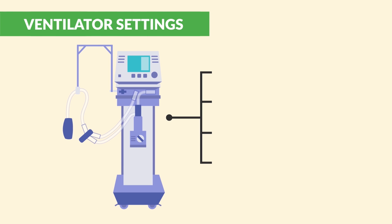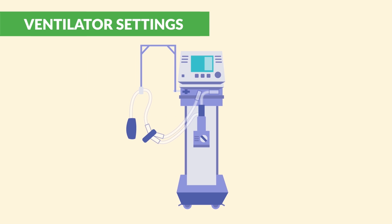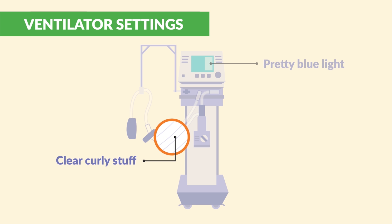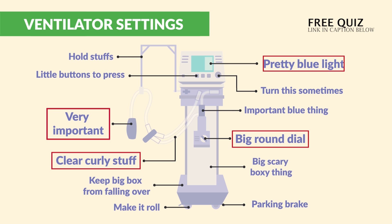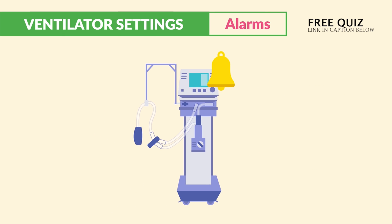Let's cover all the key ventilator numbers — alarms, mode settings, and monitoring. The pretty blue light tells us important numbers, the clear curly stuff is where lung secretions build up, and the big round dial is always a family favorite. This is actually a meme from Facebook — half the time no one knows how a ventilator works; they just push it around like a big refrigerator. Okay, let's start the lecture with alarms.